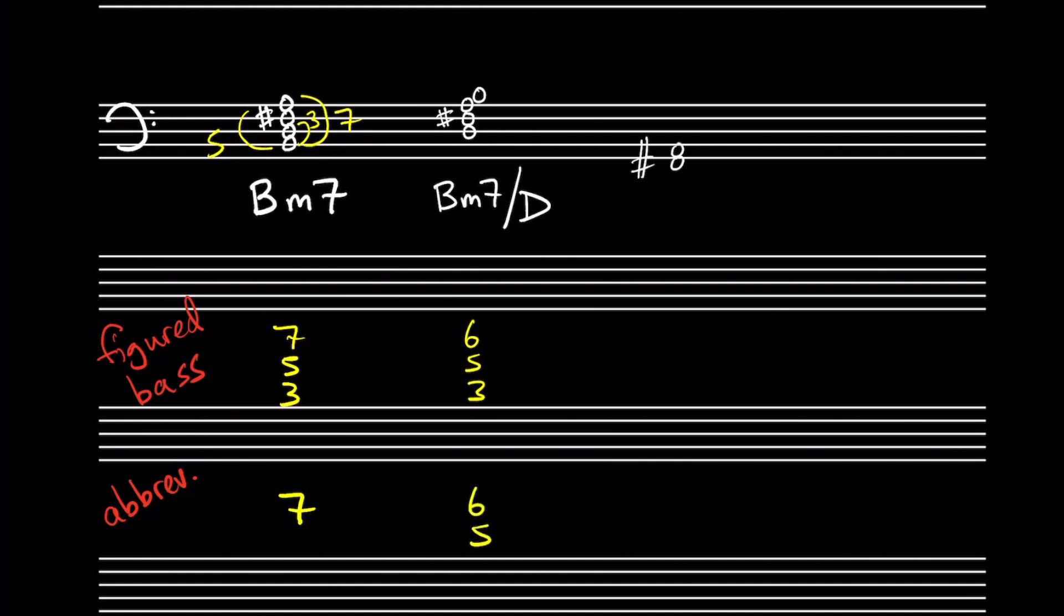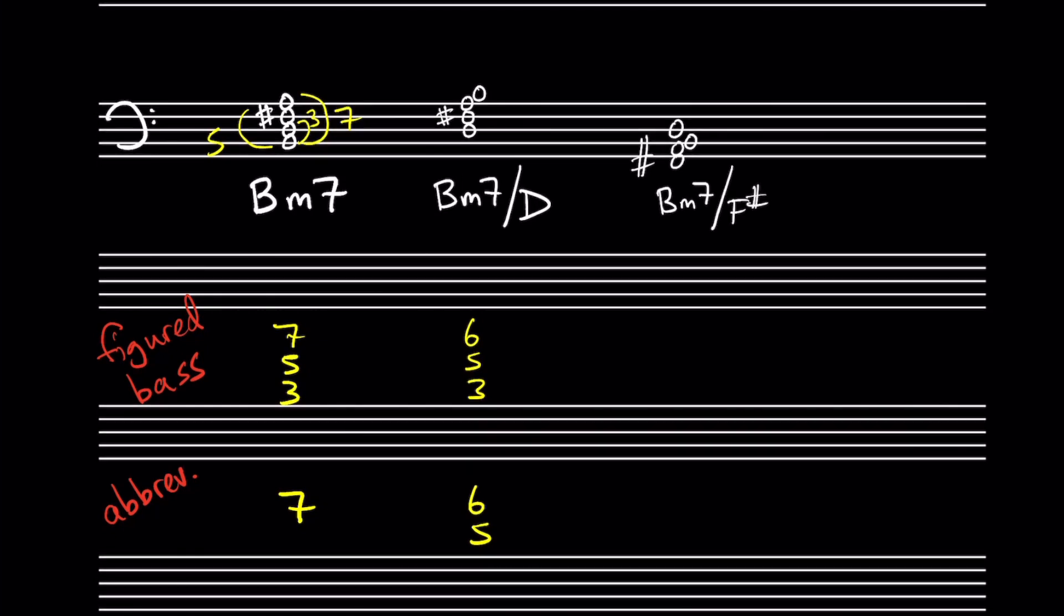The second inversion of this chord has the chord's fifth in the bass. Here the fifth is F sharp, so our lead sheet notation would be Bm7 slash F sharp. The full figured bass is 6-4-3, abbreviated to just 4-3.